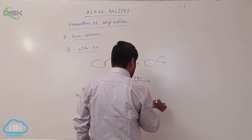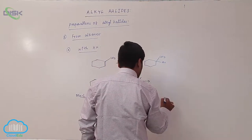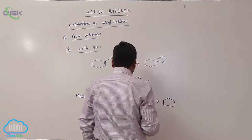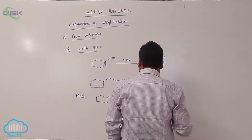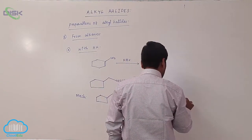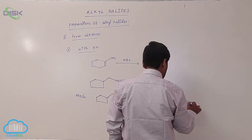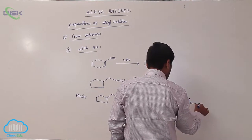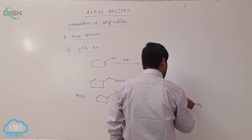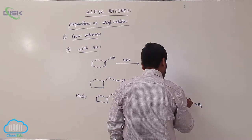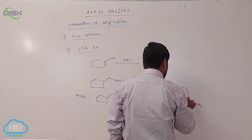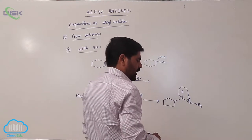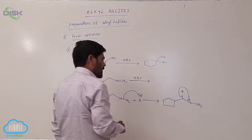So therefore it converts into a carbocation — CH with positive charge H2, then here is CH3, then hydrogen. This hydrogen migrates to here.